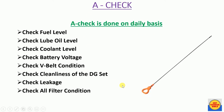In A check, first check the fuel level. There is a fuel indicator on the DG with which we can monitor the fuel level. If it is below half, add fuel into the diesel tank.